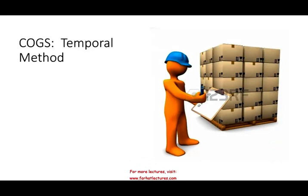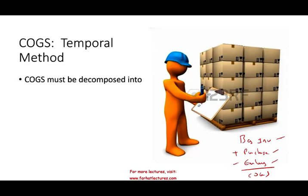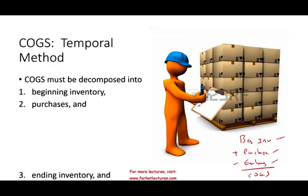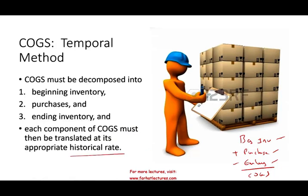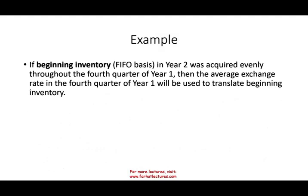Now let's talk about the temporal method when it comes to cost of goods sold. Under the temporal method, you have to have a good understanding of cost of goods sold. Cost of goods sold is beginning inventory plus purchases minus ending inventory. So notice it's composed of three items: beginning inventory, purchases, and ending inventory. Under the temporal method, we're going to have to decompose beginning inventory from purchases from ending inventory, and for each component we must translate at the appropriate historical rate.